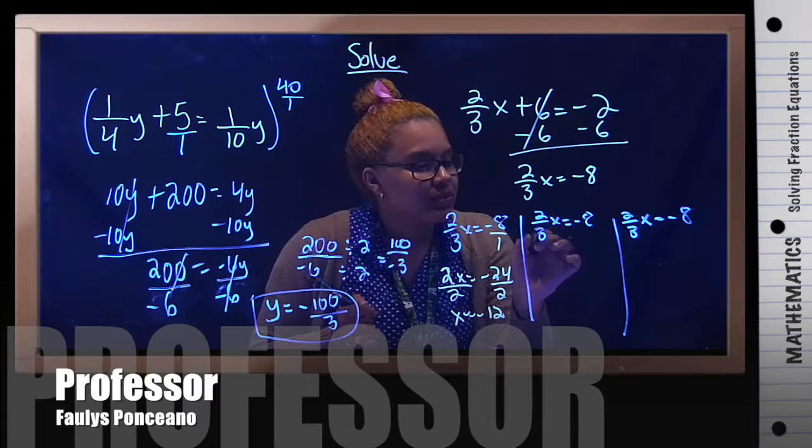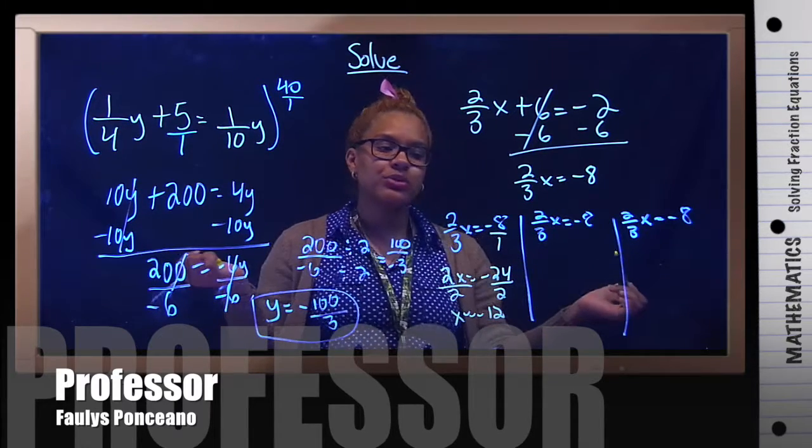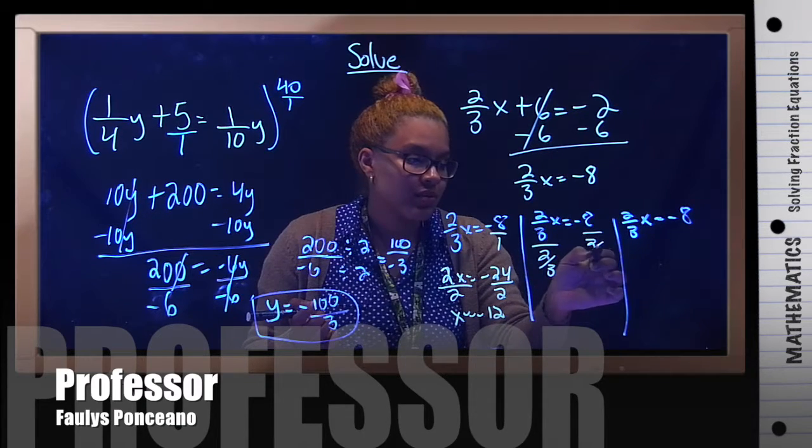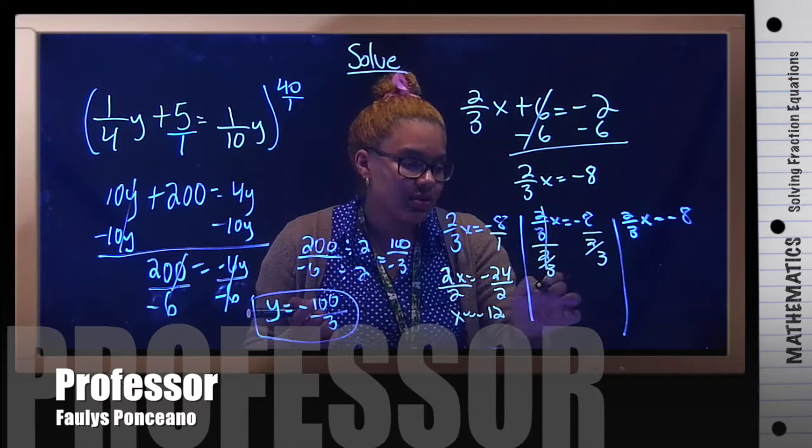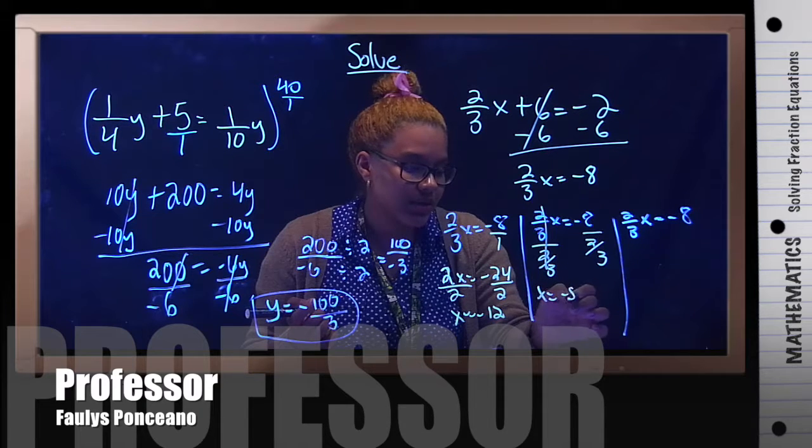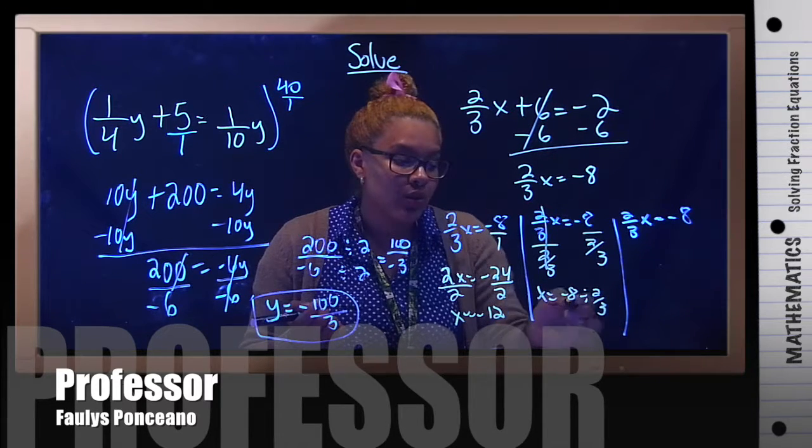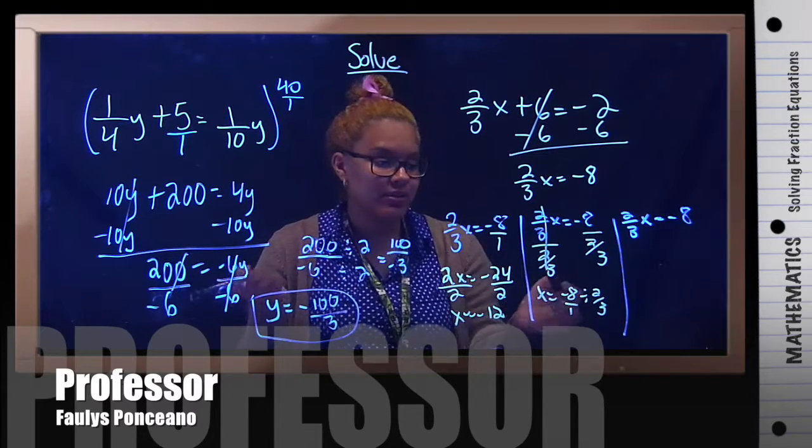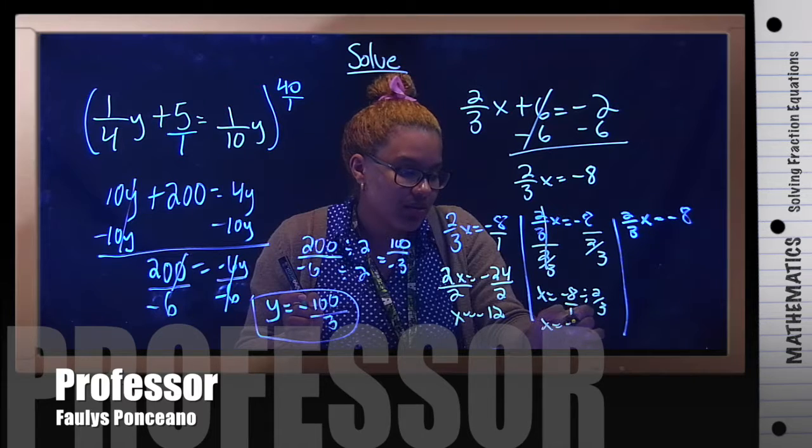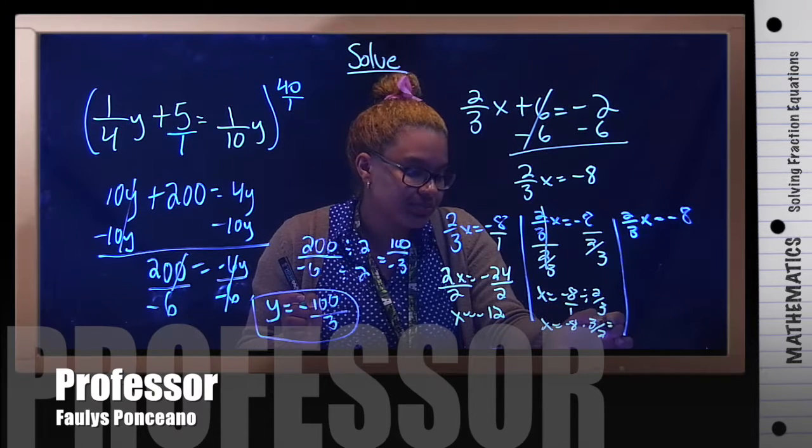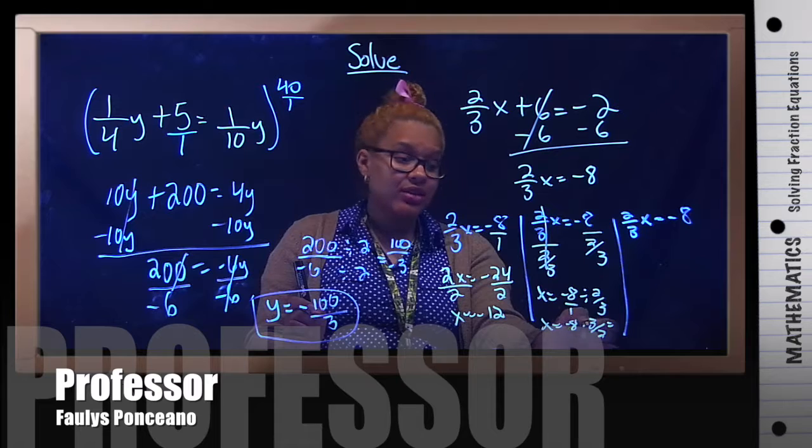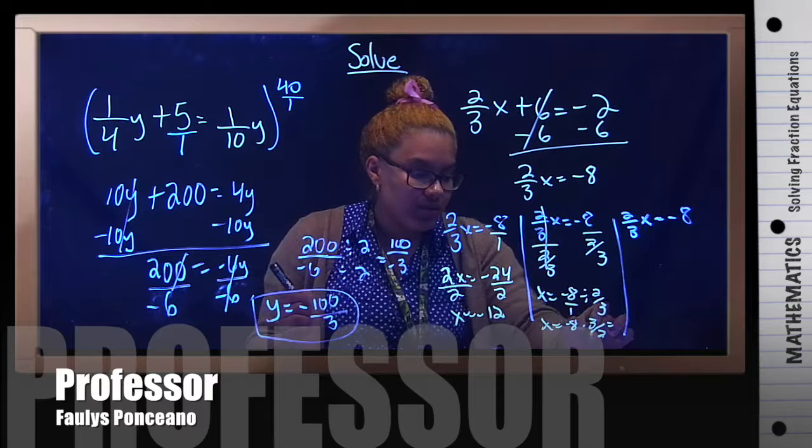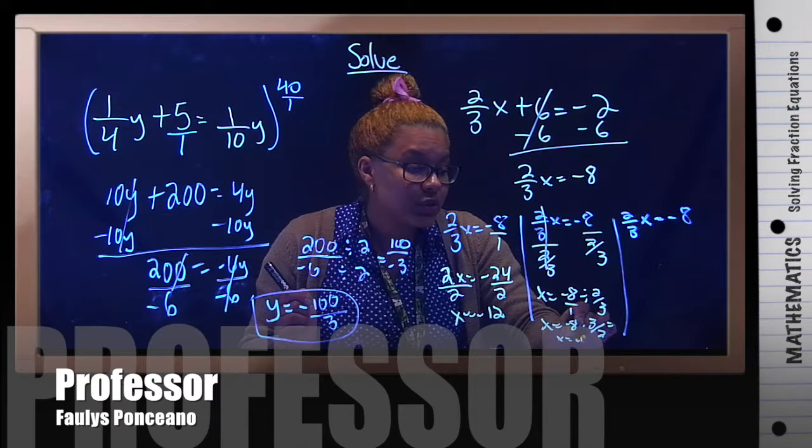I can say, well, this is a multiplication. Opposite of multiplication is division. So I'm just going to divide by 2 thirds. Just cancel, leaving you with x equals negative 8 divided by 2 thirds. Well, if you remember, you cannot divide fractions. You've got to turn them into multiplication. So this is x equals negative 8 times 3 over 2. Negative 8 times 3 is 24 divided by 2 is negative 12. I'm running out of space. x equals negative 12.